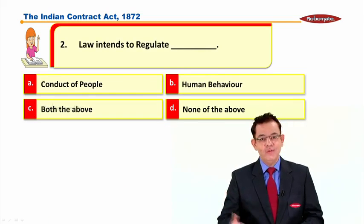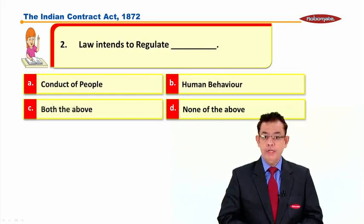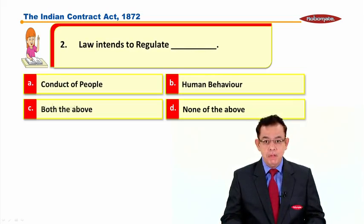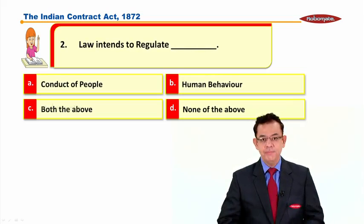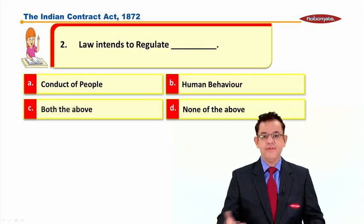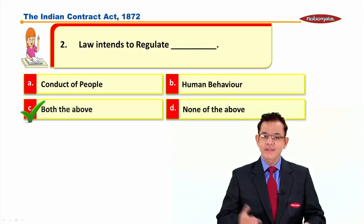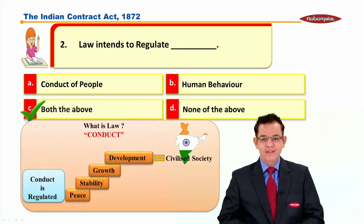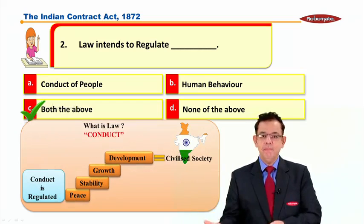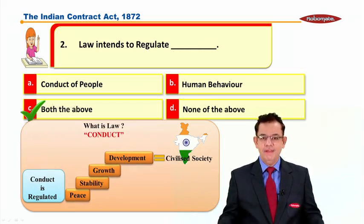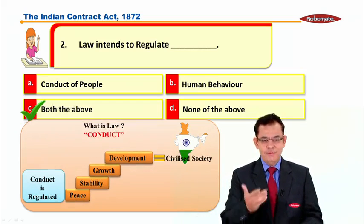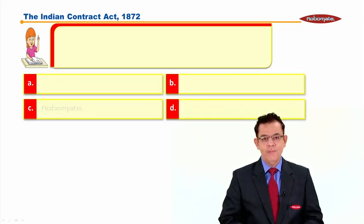Here comes the second MCQ: Law intends to regulate what? The correct answer is conduct of the people. Because conduct of the people means behavior — how you behave in your day-to-day life. That is what law intends for.